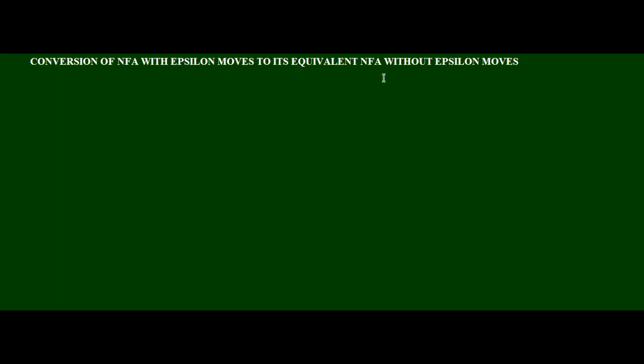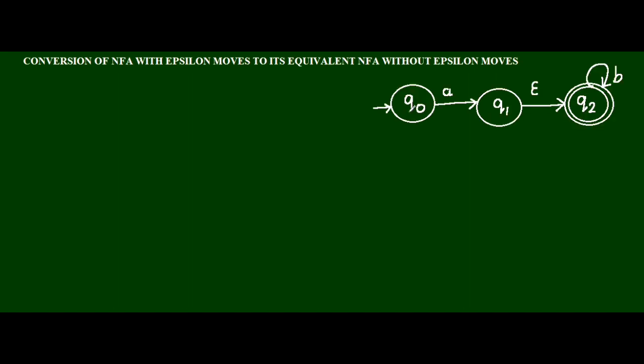In this lecture, I am going to explain conversion of NFA with epsilon-moves to its equivalent NFA without epsilon-moves. I am going to explain this with an example. In this example, there are three states where Q0 is the initial state and Q2 is the final state, and two input symbols A and B are used.